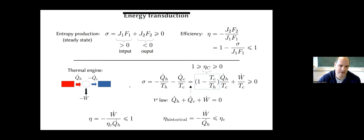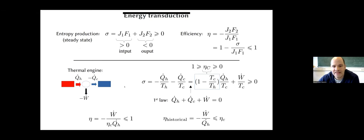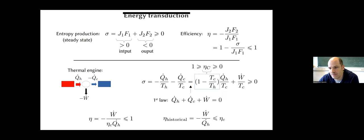The most common form of energy conversion is the thermal machine, where work is extracted from a heat bath and the remaining energy is dumped in a cold bath. In that case, entropy production is given in the two reservoirs by the heat divided by the temperature of the reservoir. By using the first law — that heat from the hot reservoir plus heat from the cold reservoir plus work equals zero — we can rewrite the entropy production in a form where the famous Carnot efficiency has been introduced.